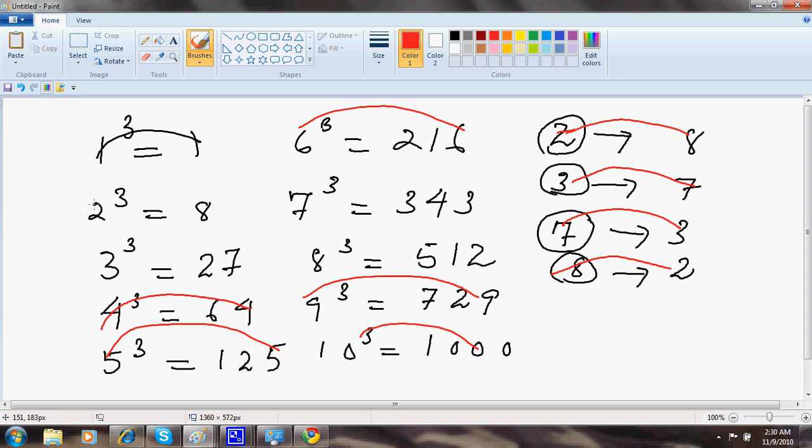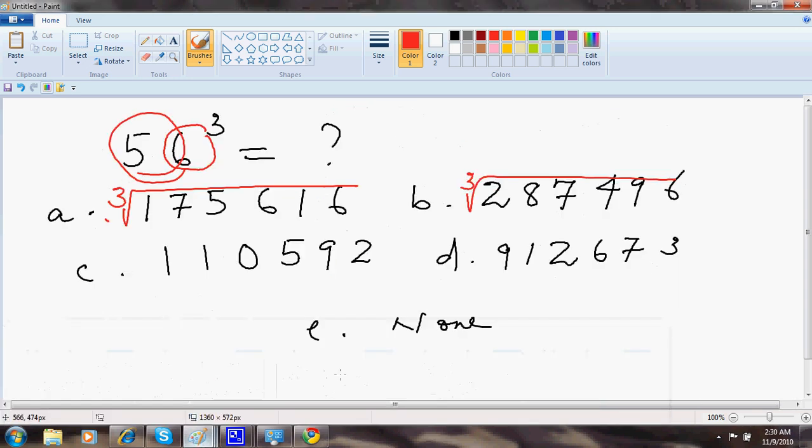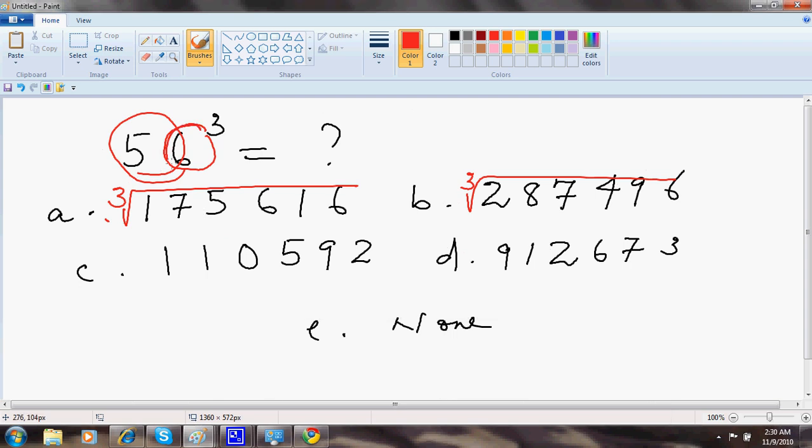In other words, if this is 2 it must be 8, and if this is 8 it must be 2. If this is 3 it must be 7. If this is 7 this must be 3. By that, I am finding that 56 cube will end in a number which will have 6 at the last. Cube root of this kind of a figure, this 6 will come here. 56 cube is the number ending in 6.